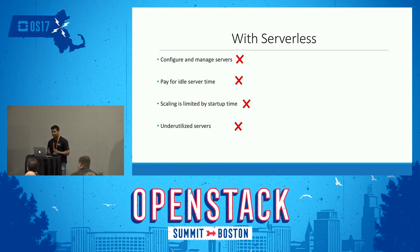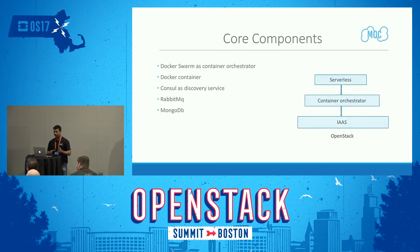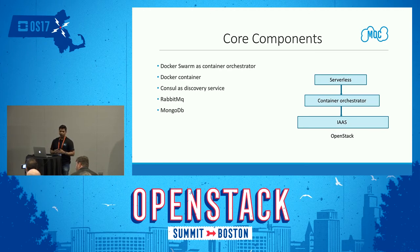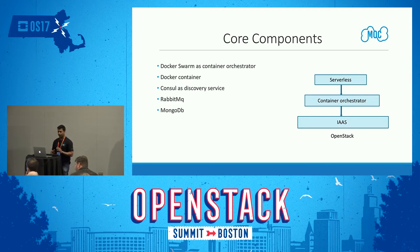This abstraction really resonated with us, and we wanted to get a chance to create such a platform on OpenStack. The serverless platform we created runs on a container orchestration engine, which runs on top of an IaaS, which is OpenStack in this case. We use Docker Swarm for the orchestration, Docker containers for running the handler functions, Consul as the discovery service, RabbitMQ for the event queue, and MongoDB as our data store.